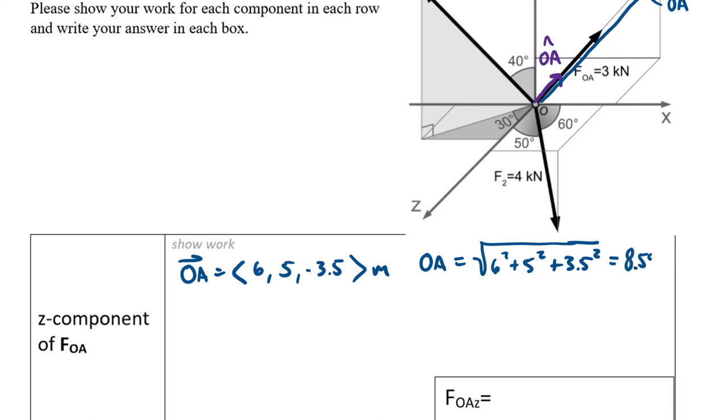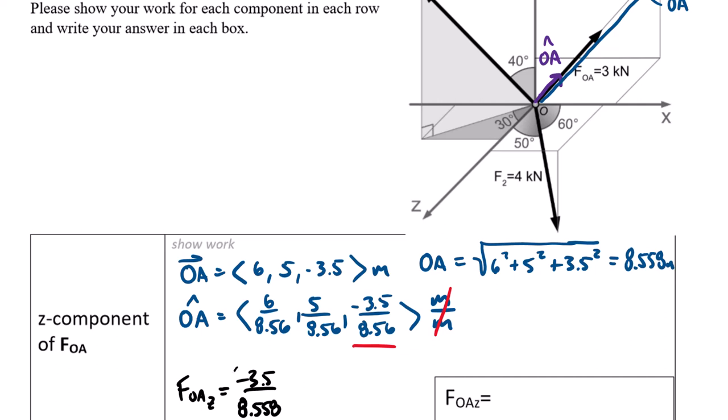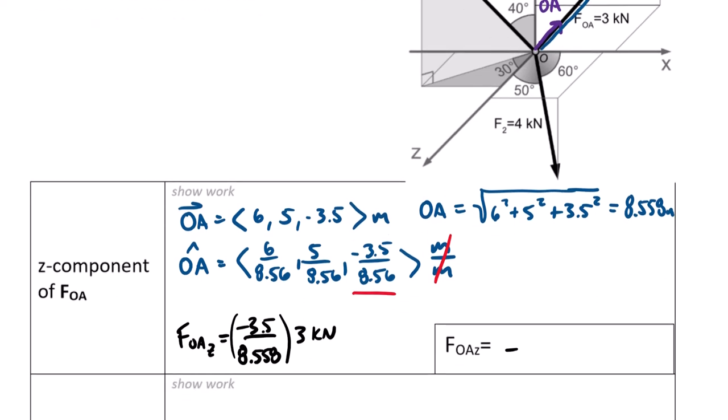To turn this into a unit vector, we need to find its overall magnitude. OA length using the Pythagorean theorem is 6 squared plus 5 squared plus 3.5 squared, totaling out to 8.558 meters. We then find the unit vector by dividing the components by the length. The z-component is negative 3.5 divided by 8.558. For the last step, FOA sub z equals that component times 3 kilonewtons, and we end up with negative 1.227 kilonewtons.